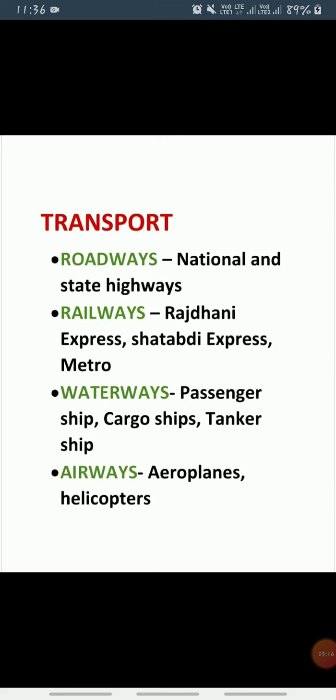Next is railways. Railways are the lifeline of our country; they connect all parts of India. At the time of independence, trains were run by steam engines. The first train in India went to Mumbai, which is in Maharashtra, and the distance travelled by that train was 34 km.